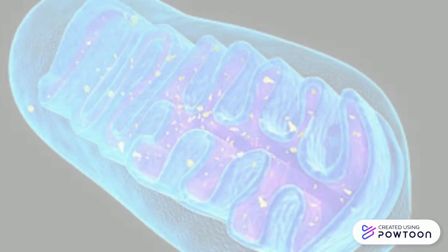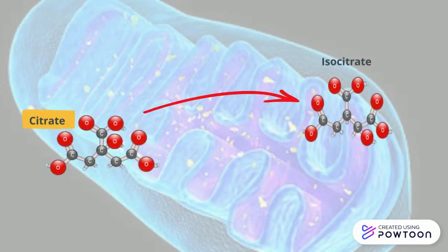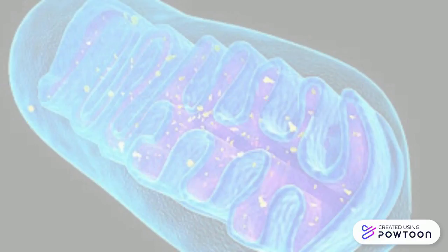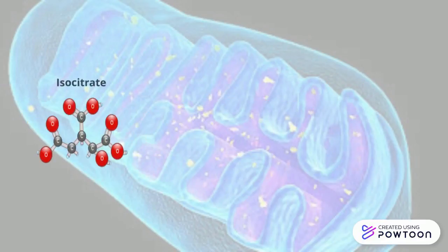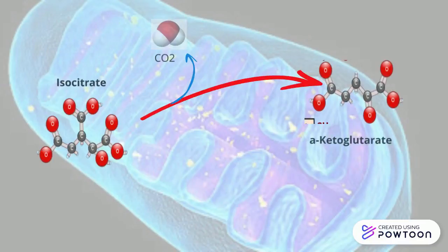In the second step, citrate will become isocitrate by changing its molecular shape. In the third step, isocitrate will release one molecule of carbon dioxide to form alpha-ketoglutarate, and in the process, one molecule of NAD⁺ will become NADH.